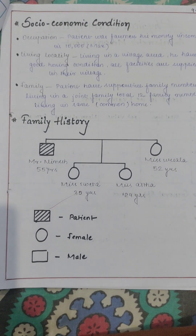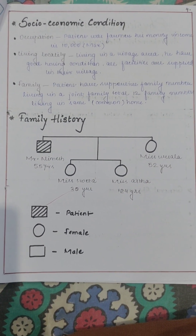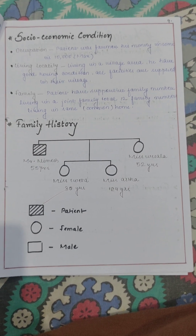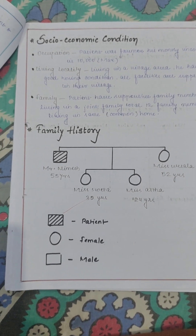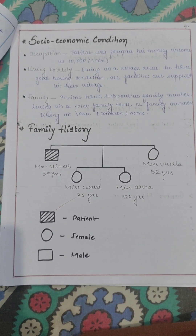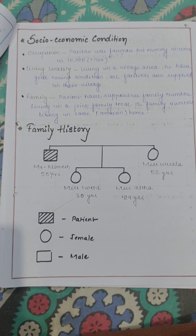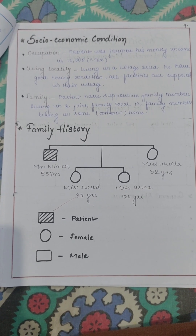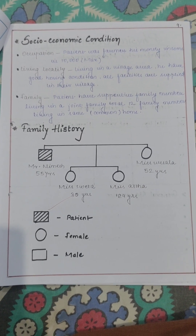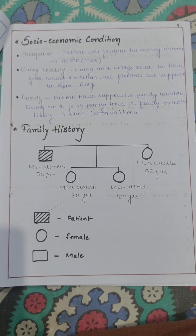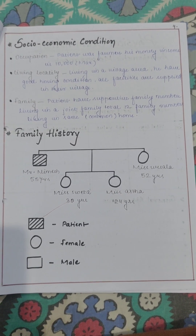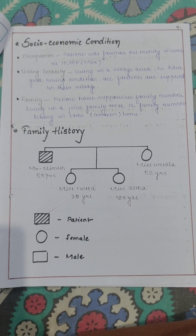Then you have to write the socio-economic condition of the patient — what is the family condition, whether the patient is living in a joint family or nuclear family. After that, make a genogram of the family members with their names.